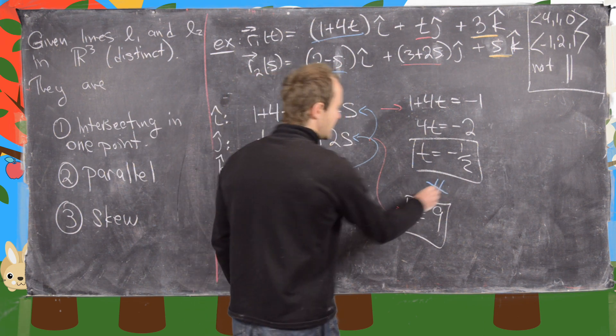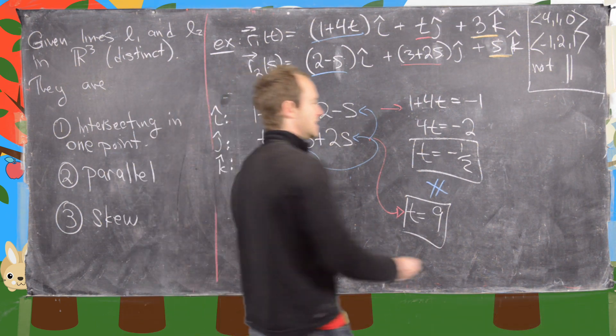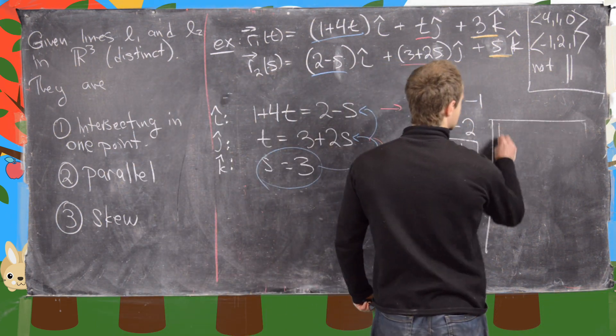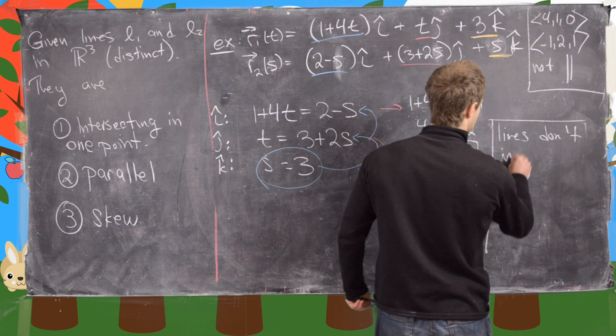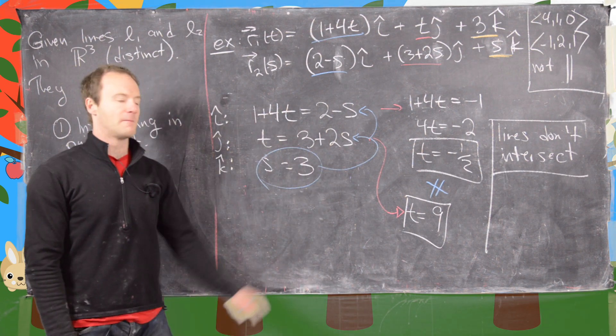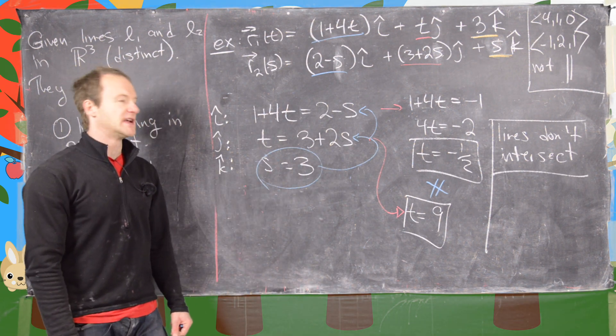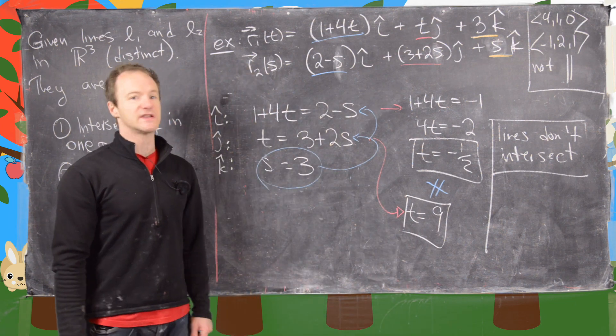But notice these are inconsistent with each other, so that tells us that these lines don't intersect. And so they're not parallel and they don't intersect, so that means they must be skew. That's the end of this example.